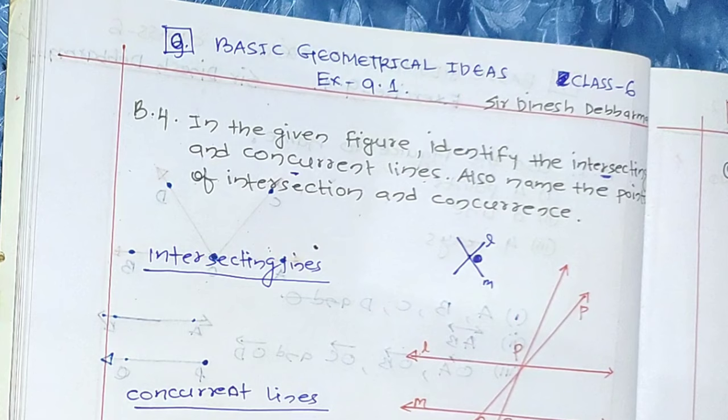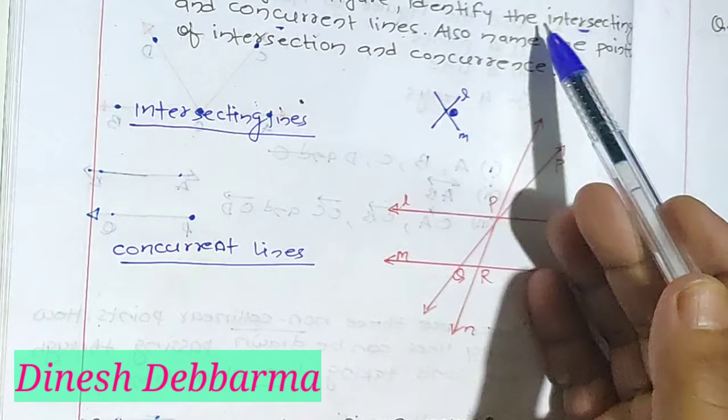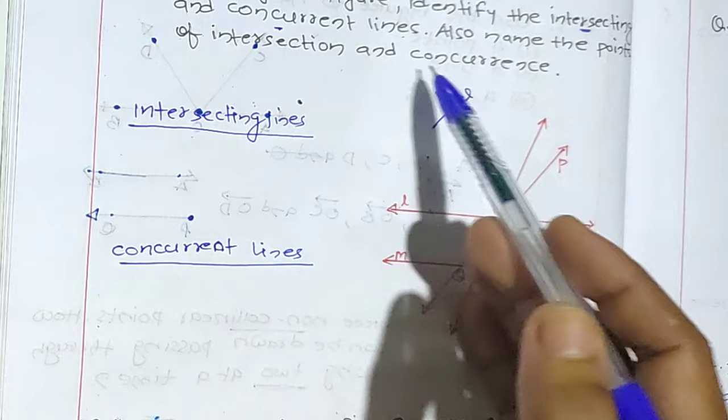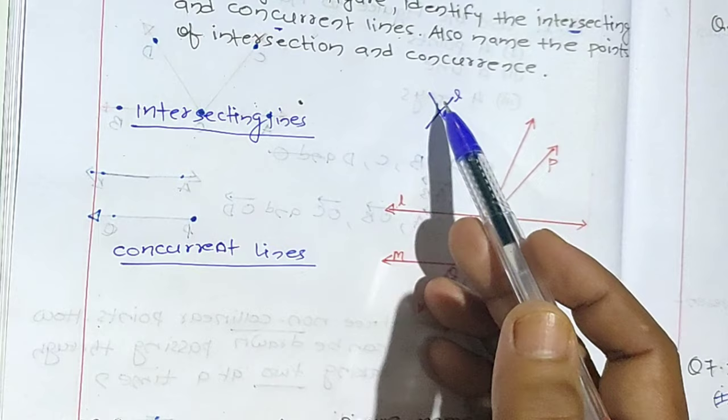Hello friends, welcome to my maths class. Let's learn about geometrical ideas, class 6 maths chapter 9. We need to identify the intersecting and concurrent lines, find the intersecting lines and concurrent lines, and also point out the points of intersection and concurrency. Intersecting lines will have two lines but one common point.